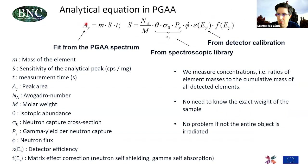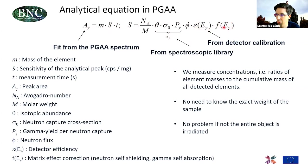The basic equation is very simple: the peak area of an element at a given gamma-ray energy is proportional to the mass of the element, the measurement time, and the analytical sensitivity factor. This contains nuclear components like the partial gamma-ray production cross-section available from spectroscopic libraries, phi the intensity of the impinging neutron beam, the efficiency of the detector system, and a correction for self-shielding and self-absorption of neutrons and gamma rays within the sample — mostly relevant for bulky samples.